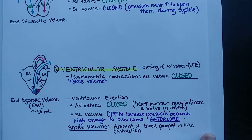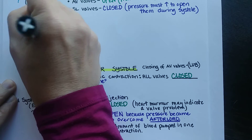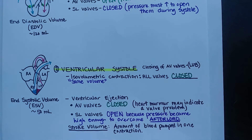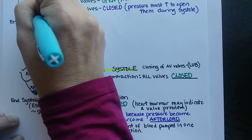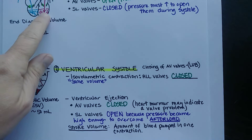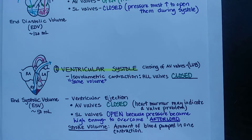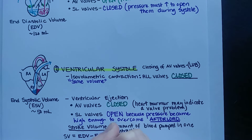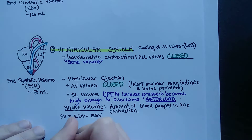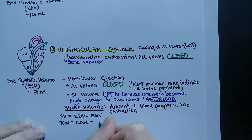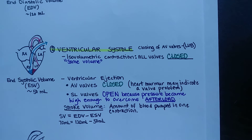End diastolic volume is about 120 milliliters. Stroke volume is calculated as end diastolic volume minus end systolic volume: 120 minus 50 equals approximately 70 milliliters. So stroke volume is usually about 70 milliliters, based on an average adult male at rest — these numbers can certainly vary during exercise, illness, or in different body sizes.